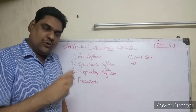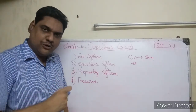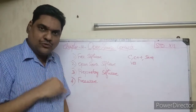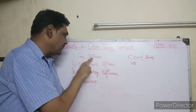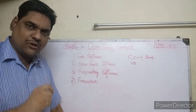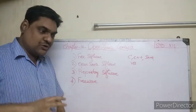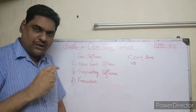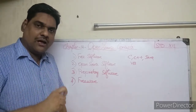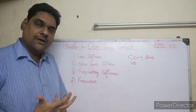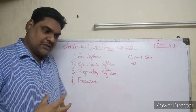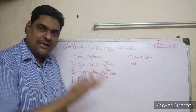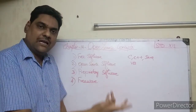In free software, the source code of the program is available, and users can do some modifications and alterations to the software. The program source code is written in high-level languages, and that source code when compiled becomes binary code — this is called a compiled program.